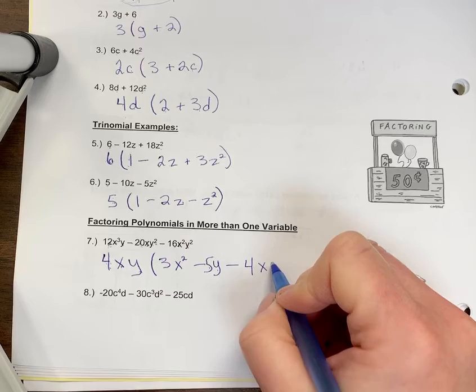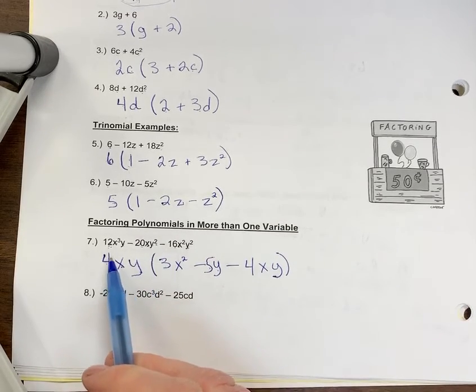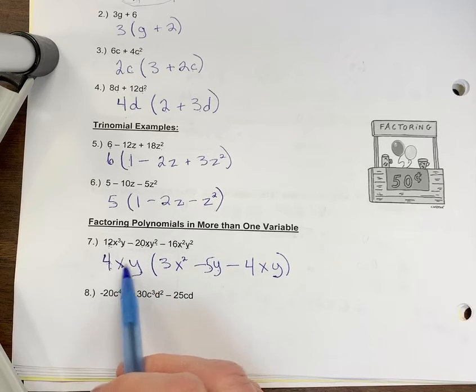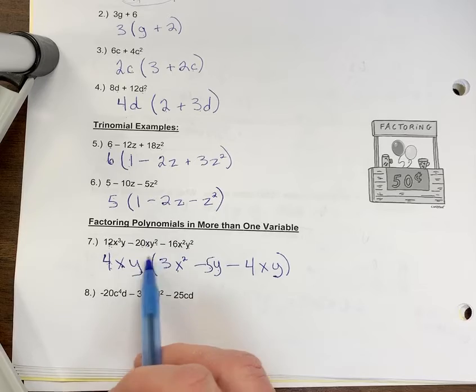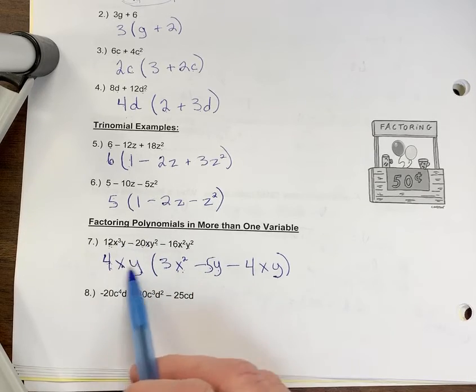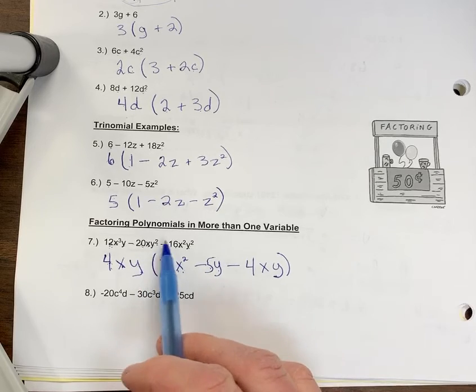Close my brackets. Don't forget to close your brackets. So you can multiply through: 4 times 3 is 12, x times x squared is x cubed - you have three of them - times y is just y. 4 times negative 5 is negative 20, xy times y is xy squared.